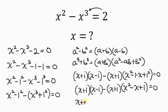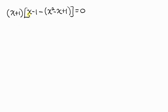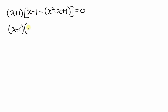We need to factor out (x plus 1) and open a bracket. From the first term, x minus 1 is remaining, so we have x minus 1 minus. From the second term, the expression x squared minus x plus 1 is remaining. This equals 0. Simplifying inside the bracket, we have (x plus 1) times (x minus 1), then open the bracket with its negative, giving negative x squared.